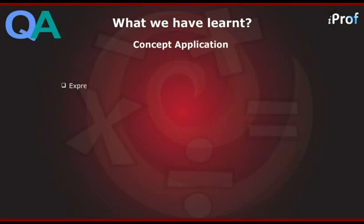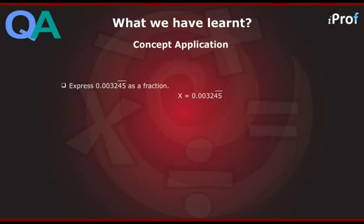Express 0.003245 with a recurring sign above 45 as a fraction. Let X be equal to 0.003245 with a recurring sign above 45. X can also be written as X = 0.003245454545... and so on and so forth, because there is a recurring sign above 45. Let this equation be known as equation 1.